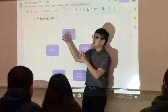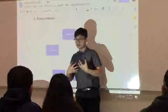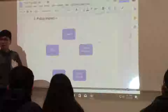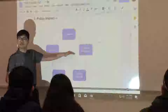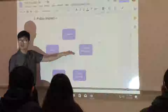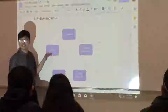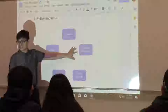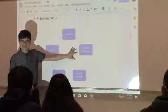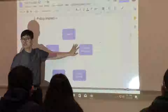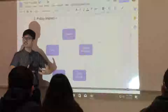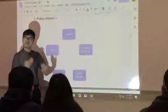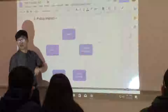We want government to care about our issues and address them by making policy that reflects our preferences. In step two, the problem is how do we communicate our interests and preferences to the government so they can make policy that reflects our will? We use what we call linkage institutions — from the word 'link,' meaning connect. It connects the people's interests and concerns to the government, so they can make policy that reflects the will of the people.